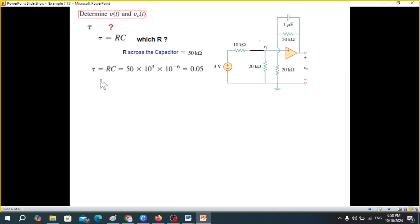Now we need to find tau. Tau is Rc, R into C. But which R? This is the circuit that we have. So there are so many R's, but it has to be the R across the capacitor. So this R, which is across the capacitor, that we'll use. This is also called R7. So Rc is now 50k multiplied by the capacitor 1 microfarad. So it will be 0.05 second.